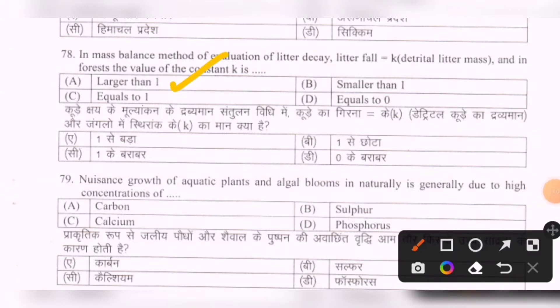Next question: Nuisance growth of aquatic plants and algal blooms in water bodies is generally due to high concentrations of which element? Options are: carbon, sulfur, calcium, phosphorus. The correct option is phosphorus.